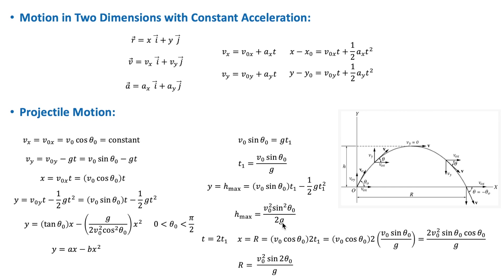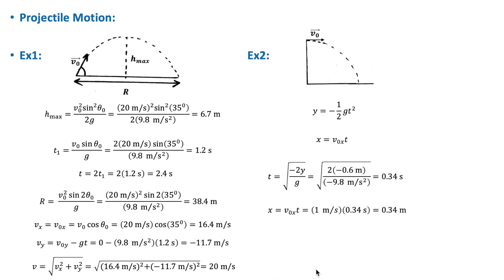To calculate the range R, the object returns to the same height at t = 2t₁. Substituting 2t₁ into the x displacement equation gives the range: R = v₀² sin(2θ₀) / g.